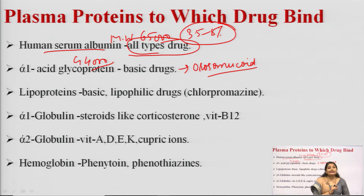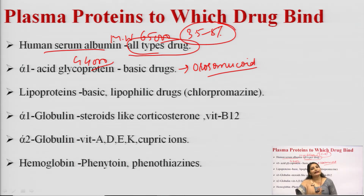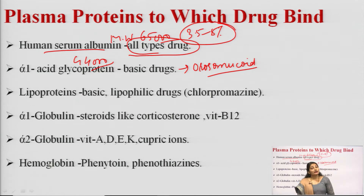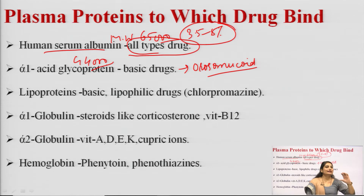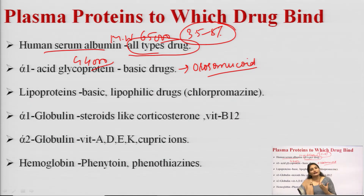Site 3 is the digitoxin binding site and site 4 is the tamoxifen binding site. Very few drugs bind to sites 3 and 4; the maximum drug binding occurs at sites 1 and 2. A drug can also have affinity for more than one binding site — the main site is called the primary site and the other is called the secondary site.